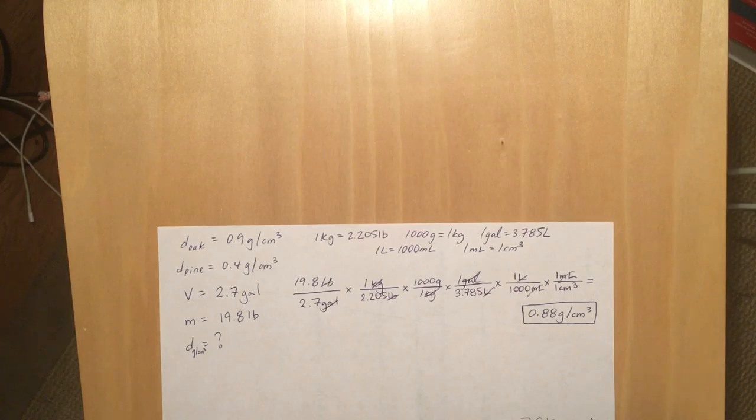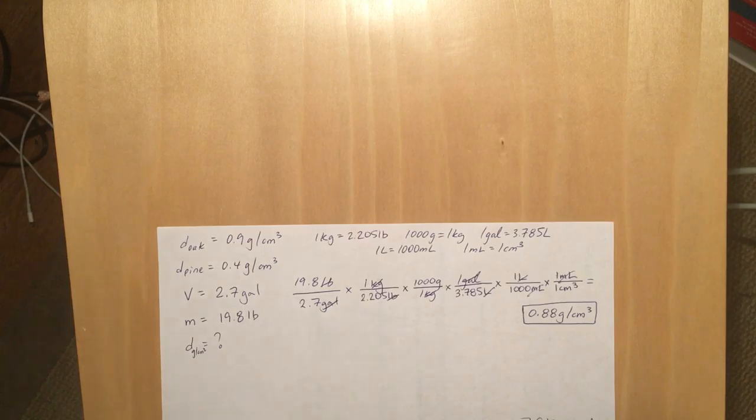So what I converted first was the mass units from pounds to kilograms and then from kilograms to grams. And I stopped there because that's the units that I wanted. I wanted grams per cubic centimeter. And right now I'm in grams per gallon. So that's not what we want, the volume unit at least.